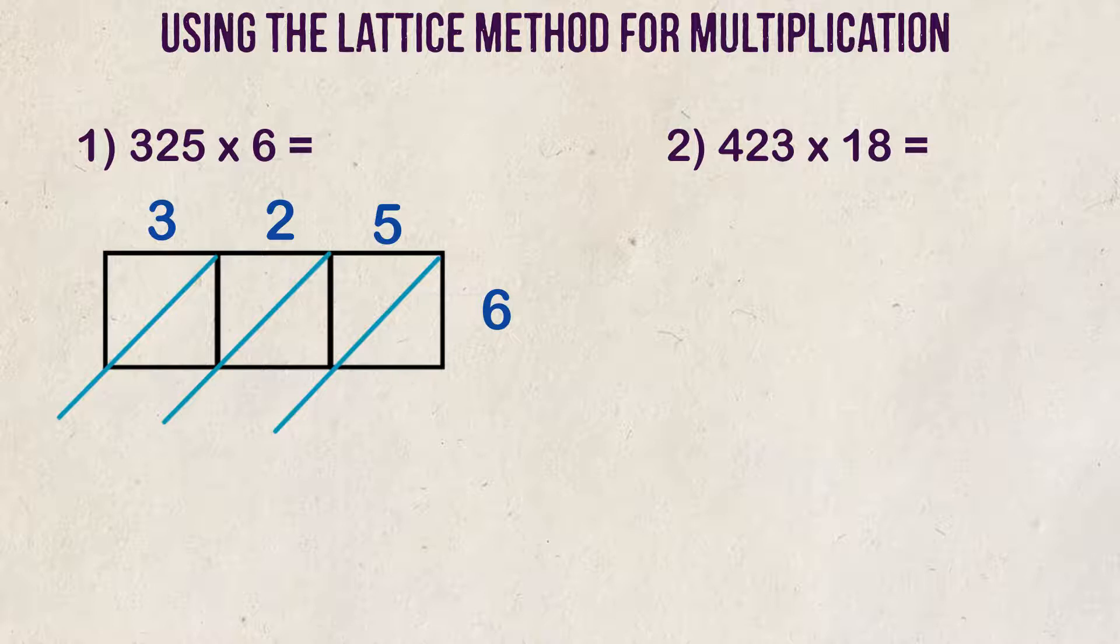The diagonal lines represent 1 spots, 10 spots, the 100 spot, thousands, and so on.